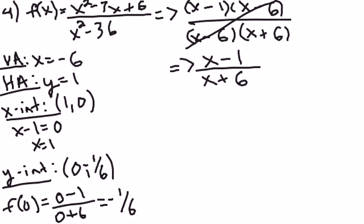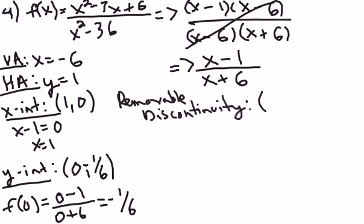Going back to the cancelled factor — if I set x minus 6 equal to zero, I get positive 6, so there's a hole, or removable discontinuity, at x equals 6. To find the y-value of the hole, I plug 6 into the simplified function and get 5 twelfths. So the hole is at the point 6, 5 twelfths. The x-value 6 comes from setting x minus 6 equal to zero and solving, then substituting into the simplified function.